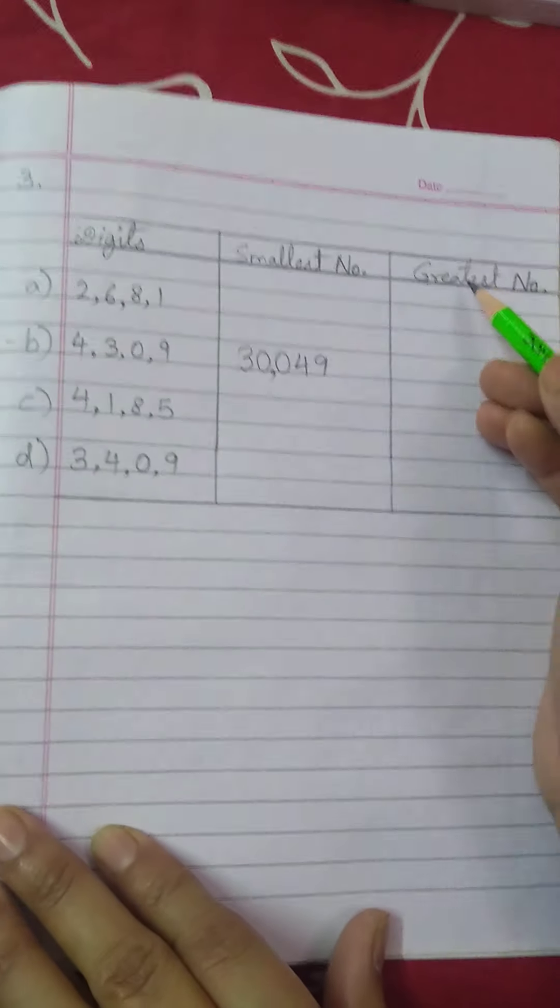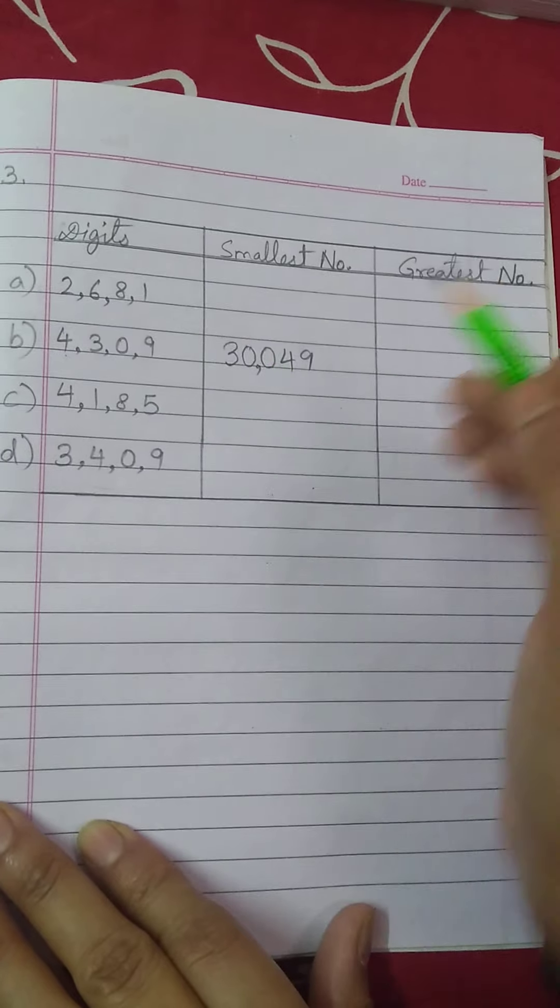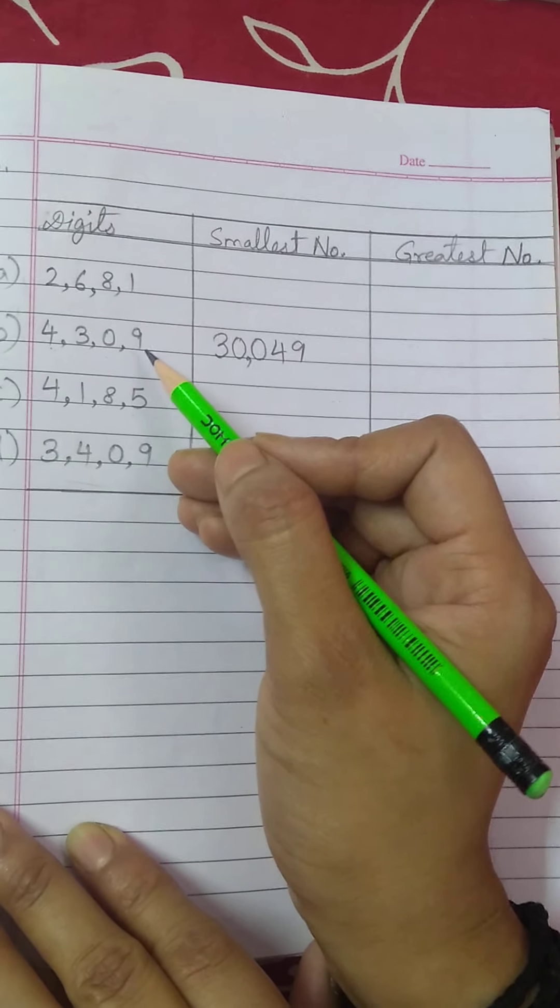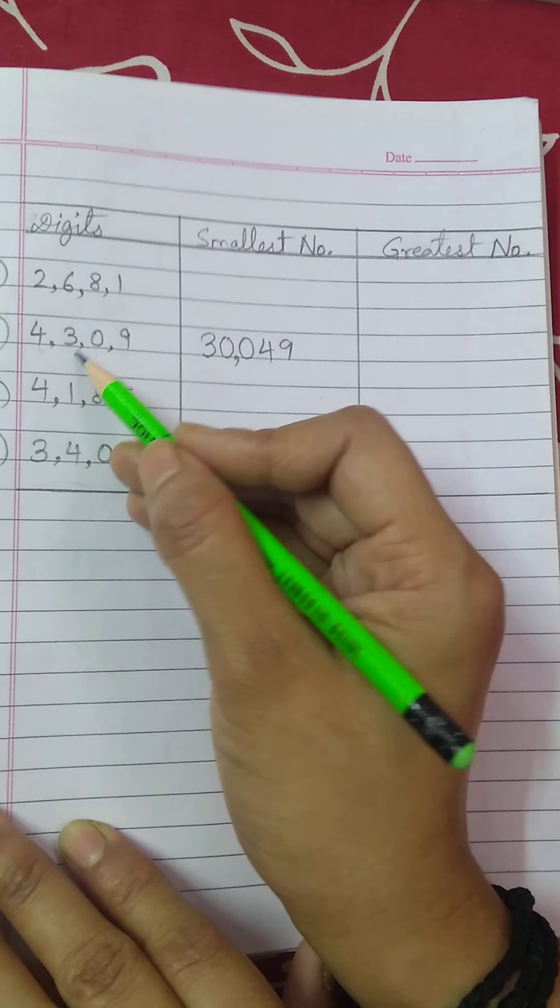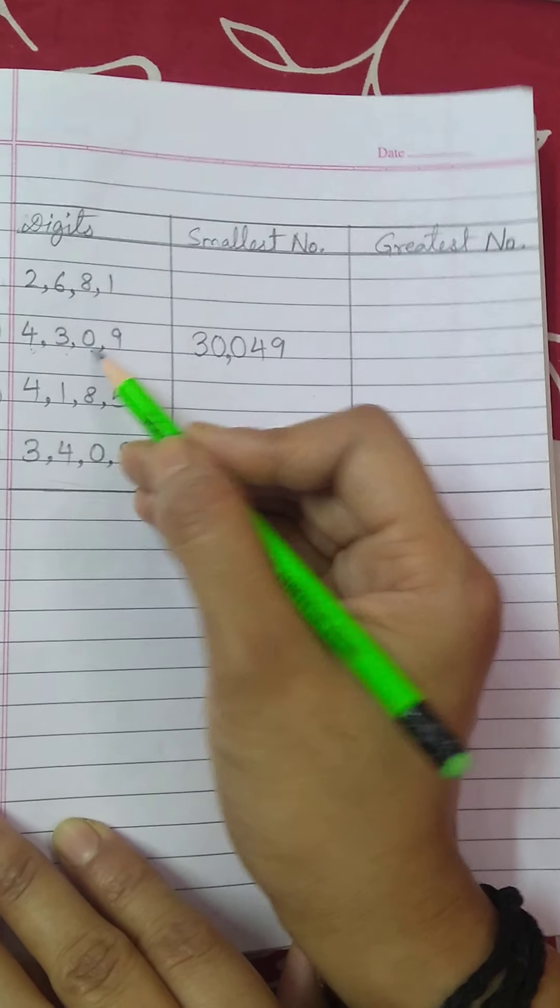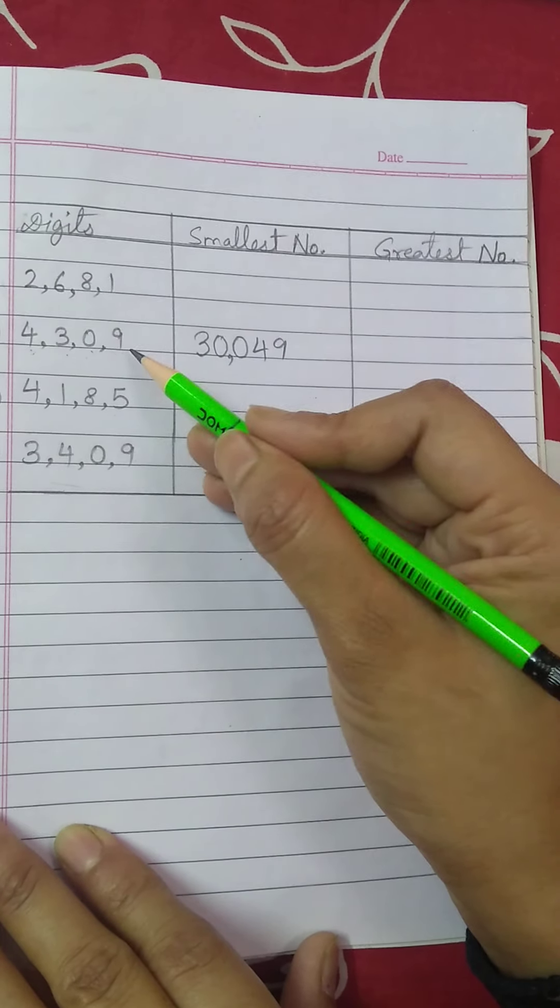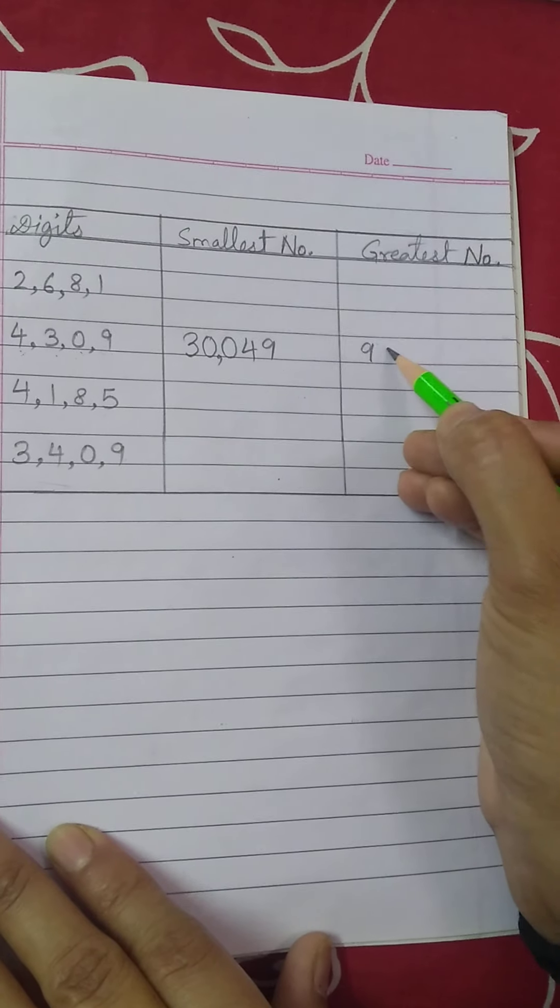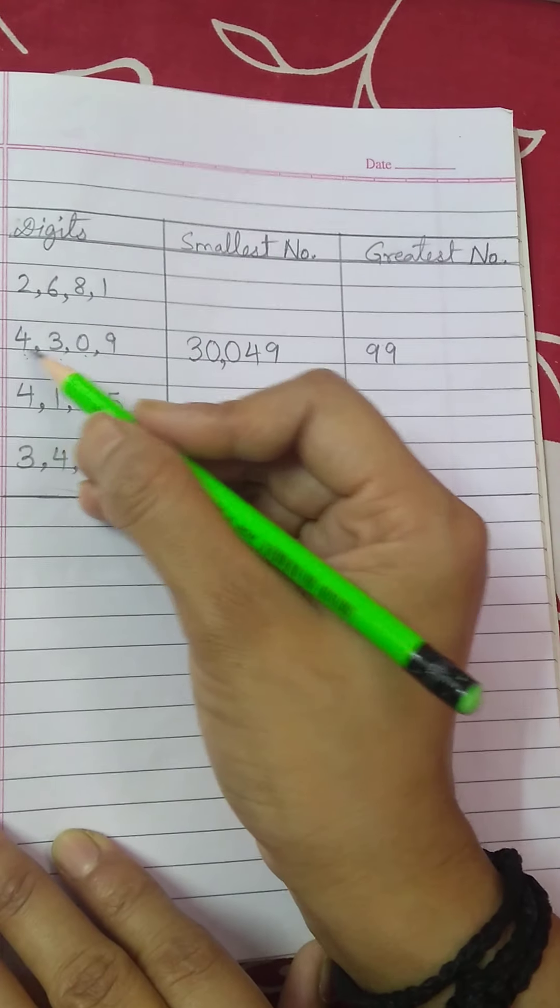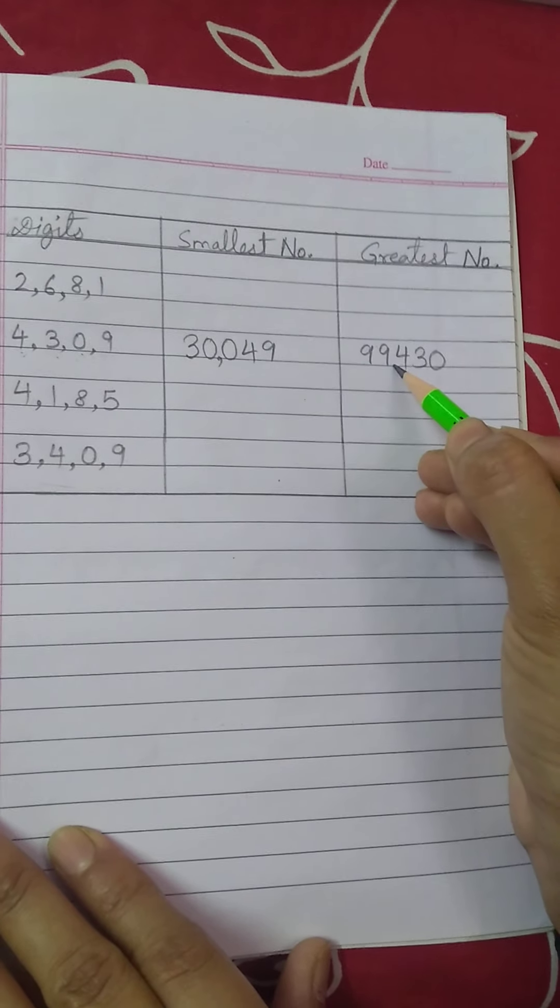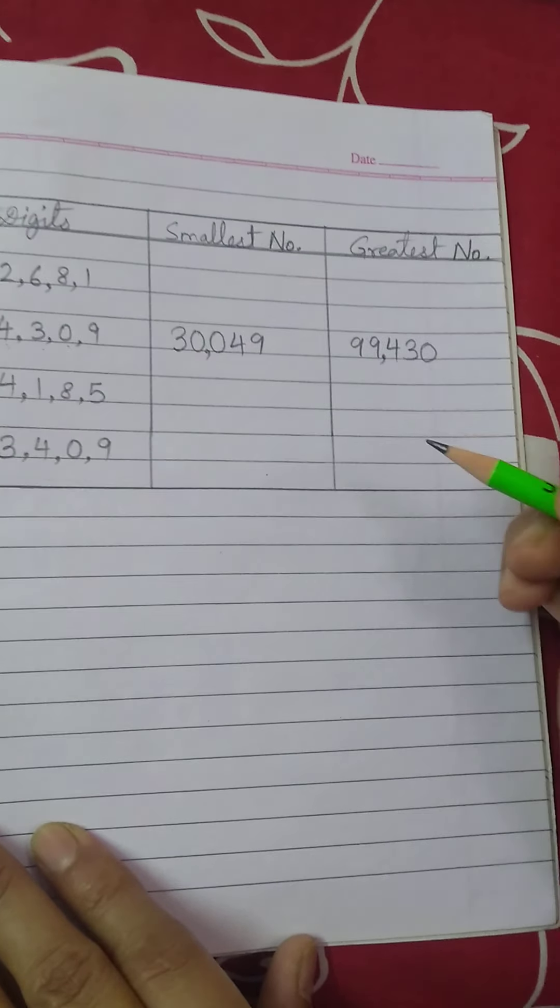Biggest ke liye hume, that means greatest number form karne ke liye hume kya karna hai? Isko descending order, bigger to smaller mein likhna hai, 9, 4, 3, 0. Aise hai na, par kaun sa digit repeat hoga? Sabse bada wala, kyunki greatest number hai, jo ki 9 hai, to 9 ko do baar likhna hai, 9, 9, 4, 3, 0, 4, 3, 0. Is tarike se aapko karna hai, okay? Comma put zarur karna.